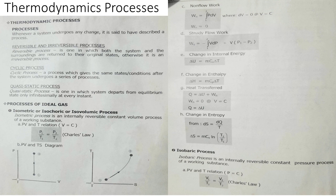On the PV diagram at constant volume, pressure goes upward from state 1 to state 2. On the TS diagram, from state 1 to state 2, it is slanted. That is constant volume. The non-flow work is the integration of P dV, where dV is equal to 0 since volume is constant. So non-flow work is 0 from state 1 to 2.